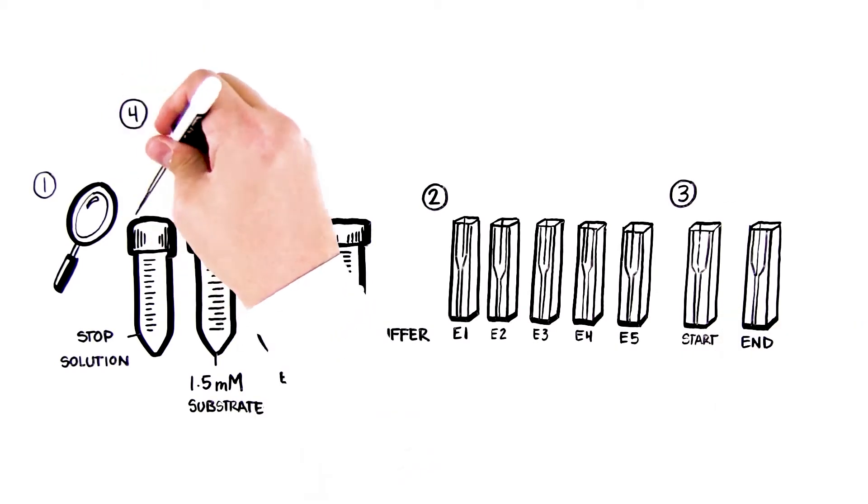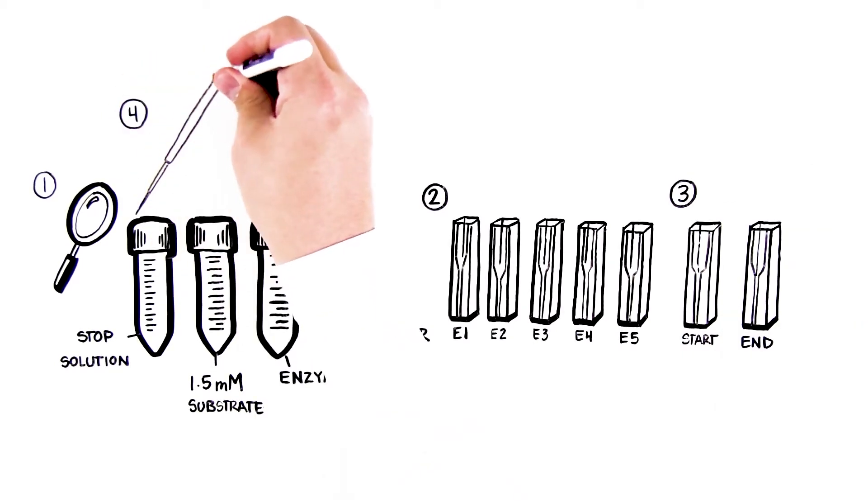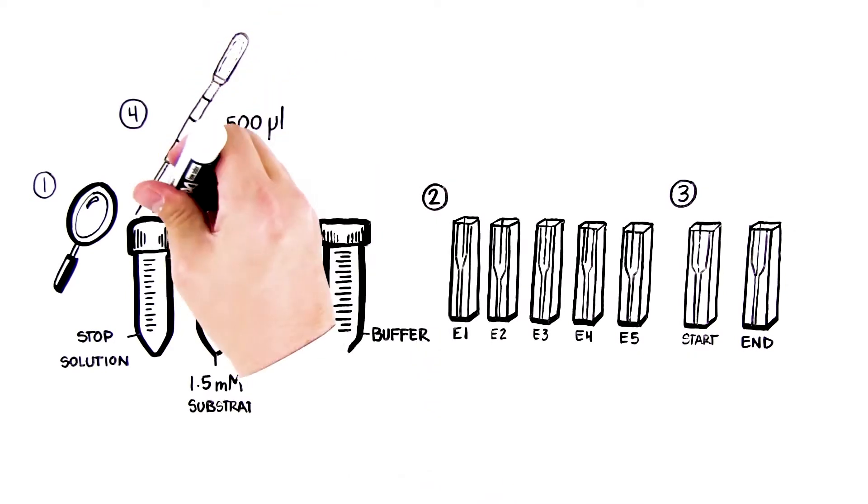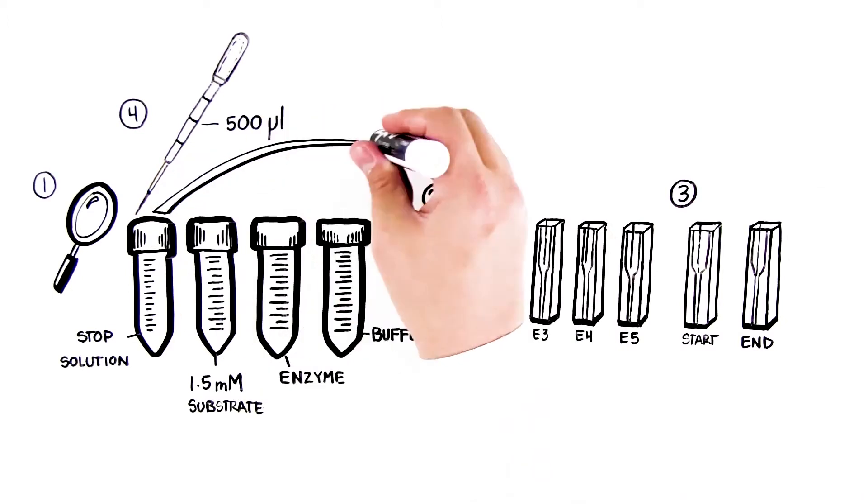Step 4: Using a clean disposable pipette (DPTP), pipette 500 microliters of stop solution into each labeled cuvette. Rinse the DPTP well with water.